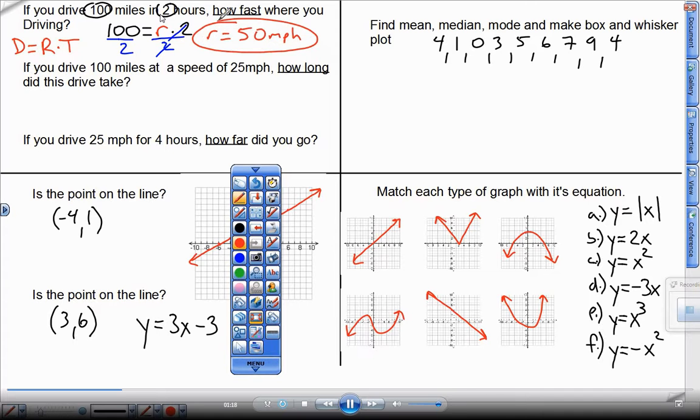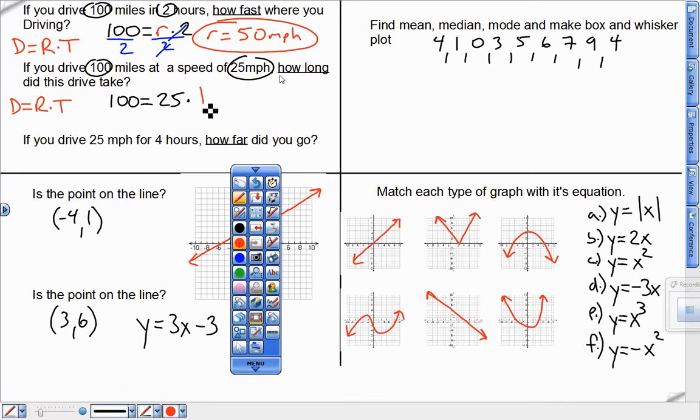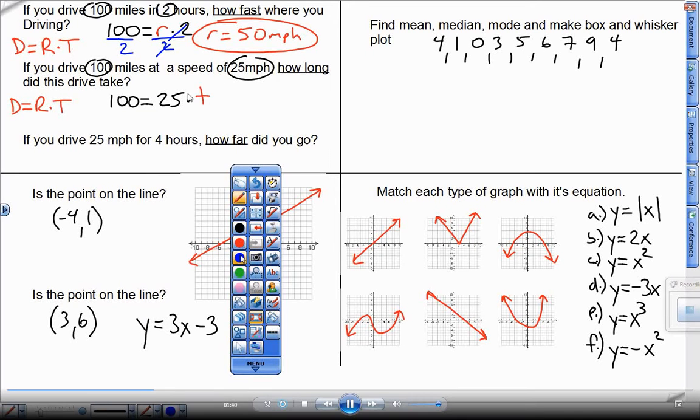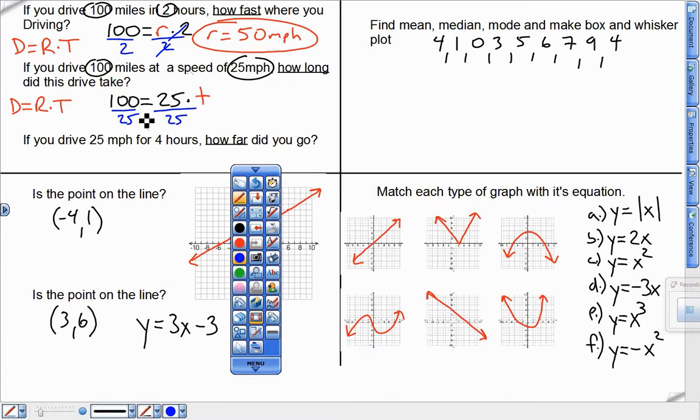Alright, second problem. Again, the D=R×T formula, plug it in, solve for what you have. So I have 100 miles. Again, that is distance, so I put that where D used to be. I have a speed. This is a rate. So I put that where R is. This one's asking for time, so I do not know what time is. So to solve for T here, the opposite of times 25, dividing both sides by 25. That cancels away and tells me that T would have to be 4 hours.